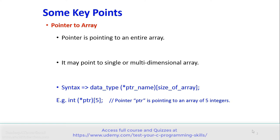In case of Pointer to Array, the pointer is pointing to the entire array, so it may point to a single or a multidimensional array. The syntax used to indicate Pointer to an array is: data type, then in brackets star PointerName, followed by the array size in square brackets. For example, int (*PTR)[5] — here pointer PTR is pointing to an array of 5 integers.